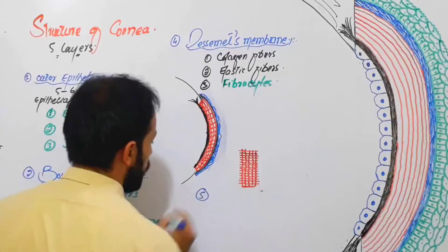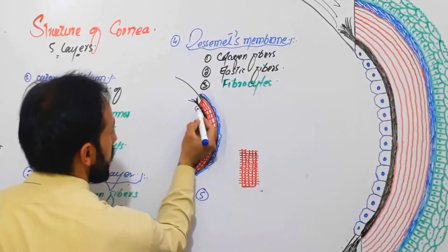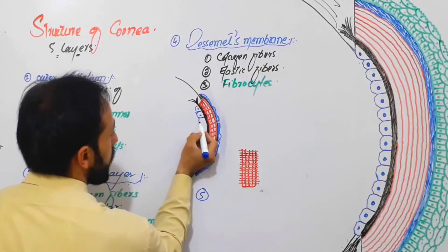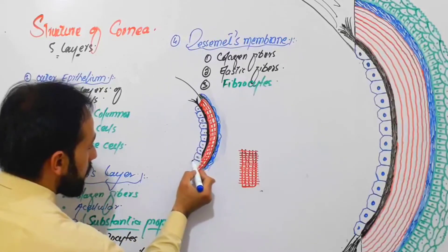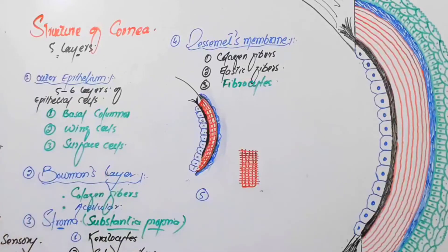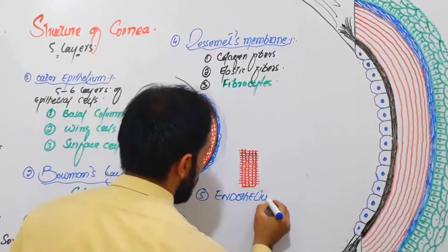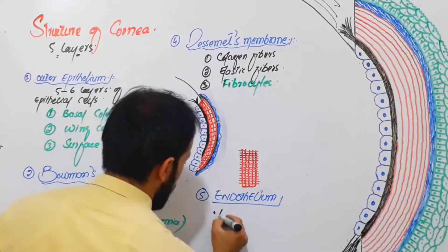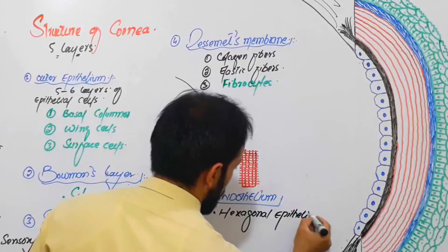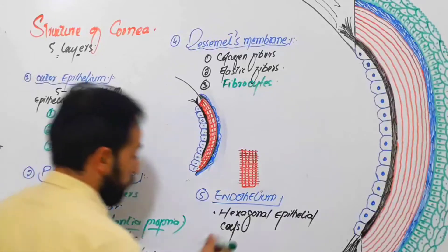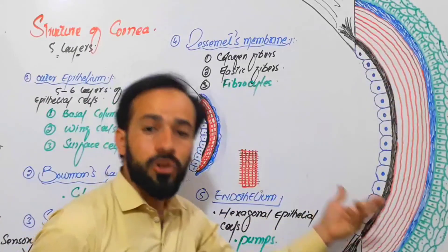The fifth layer, the most important layer, is called the endothelium. This endothelium is composed of hexagonal-shaped epithelial cells, and these cells have a very important role in the structural integrity of the cornea. These epithelial cells work as special pumps which pump watery substances from the stroma of the cornea.